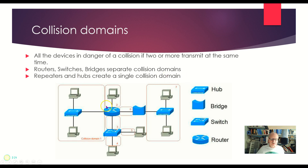Let's take a look here. Here's a router and I've got a hub here. Hubs do not separate collision domains, so everything here off of this port from the router is one collision domain. Hubs and repeaters do not separate them, but routers, switches, and bridges do.